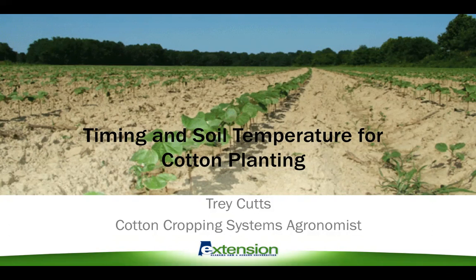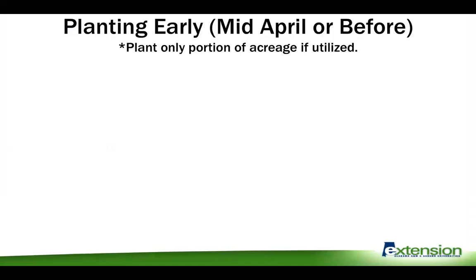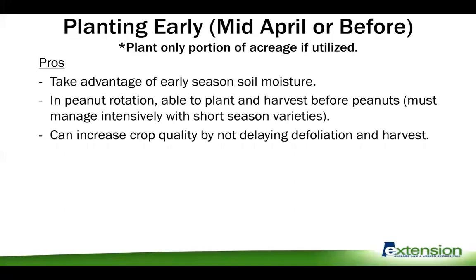I'm going to go over the normal planting windows for cotton before I get into the nuts and bolts of planting recommendations. The first scenario is early planting, which is before April 15th. The environmental risks of doing this are so great that I recommend planting only a portion of your acreage if you decide to utilize this option.